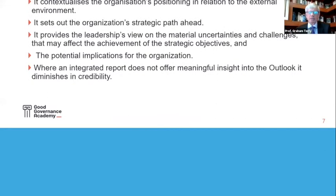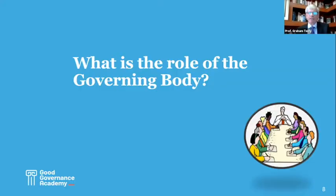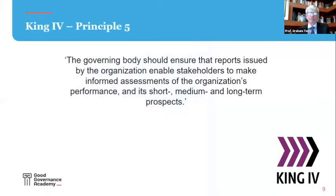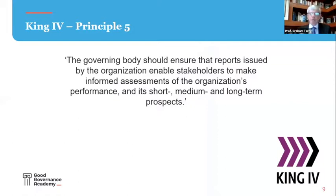Let's look at the role of the governing body in the presentation of Outlook information. I'm going to begin with a quote from King 4, principle number 5, where it says: the governing body should ensure that reports issued by the organisation enable stakeholders to make informed assessments of the organisation's performance and its short, medium, and long-term prospects. And obviously, Outlook information is critical to that.